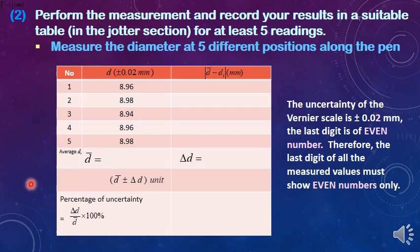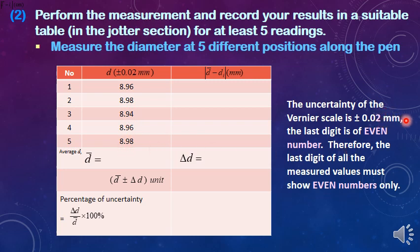Measure the diameter at 5 different positions along the pen for at least 5 readings. The sensitivity of the measuring instrument is recorded as ± 0.02 mm in the column header. Since the sensitivity consists of 2 decimal places, the 5 readings recorded must also consist of 2 decimal places. The uncertainty of the vernier scale is ± 0.02 mm and the last digit is an even number; therefore, the last digit of all measured values must show even numbers only.